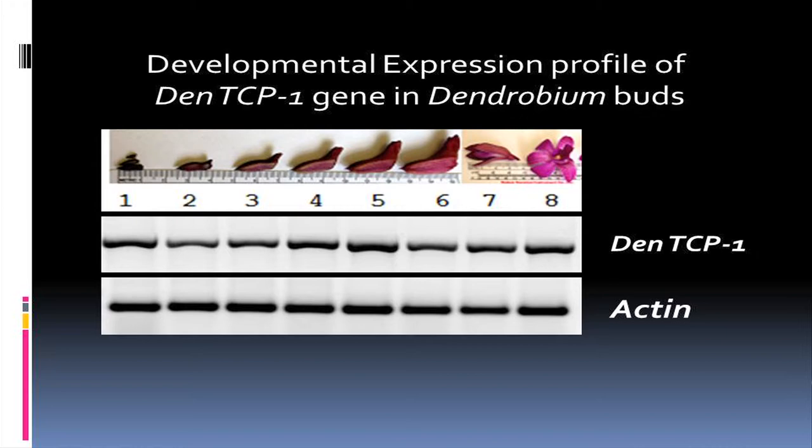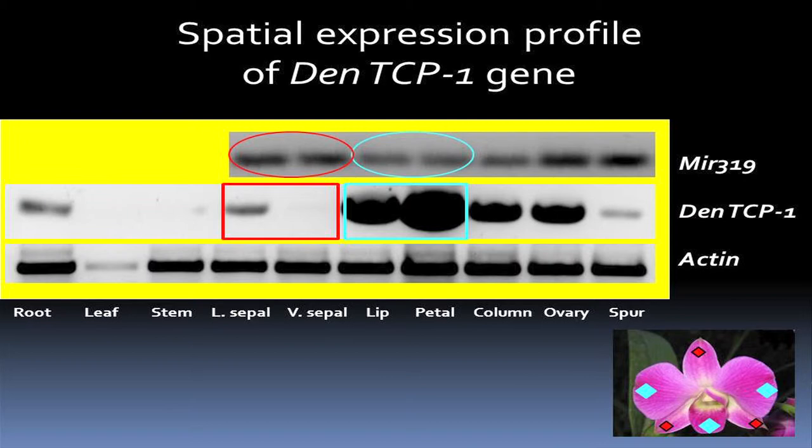Once we did that, we wanted to see where these genes are being expressed. At first we looked at developmental expression — we started with the young bud all the way up into the open flower, and we used actin as our control. As you can see, this TCP gene is expressed equally throughout all the different stages of development. So that led us to look at the different organs of the flower.